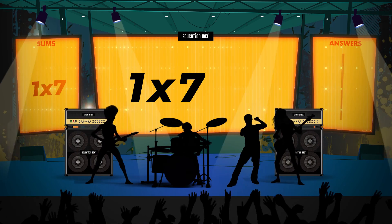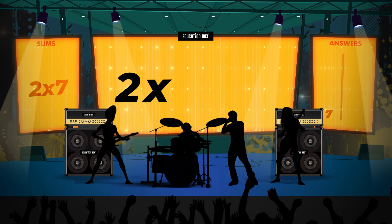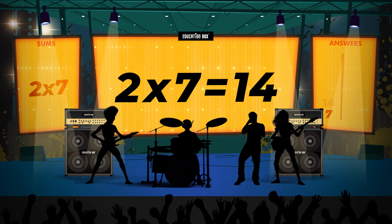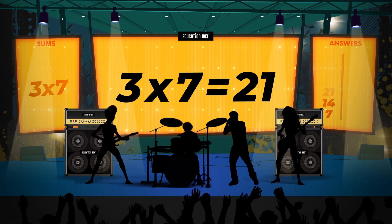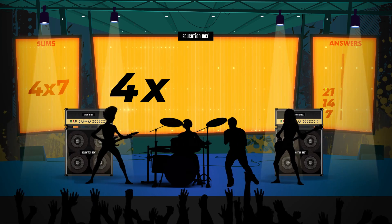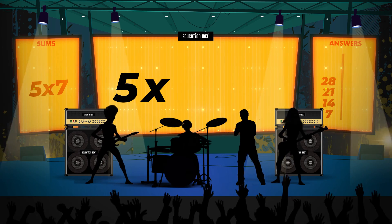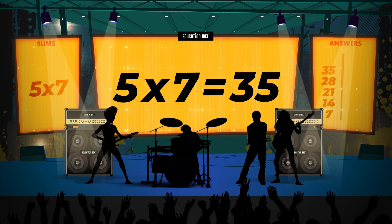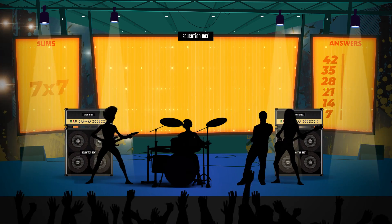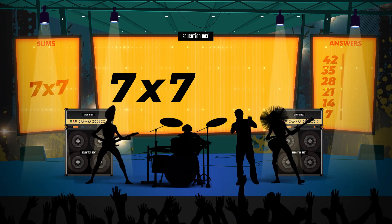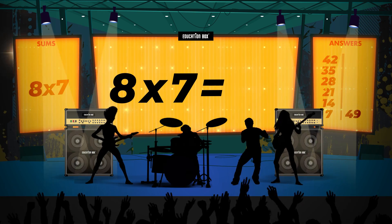One times seven is seven. Two times seven is fourteen. Three times seven is twenty-one. Four times seven is twenty-eight. Five times seven is thirty-five. Six times seven is forty-two. Seven times seven is forty-nine. Eight times seven is fifty-six.